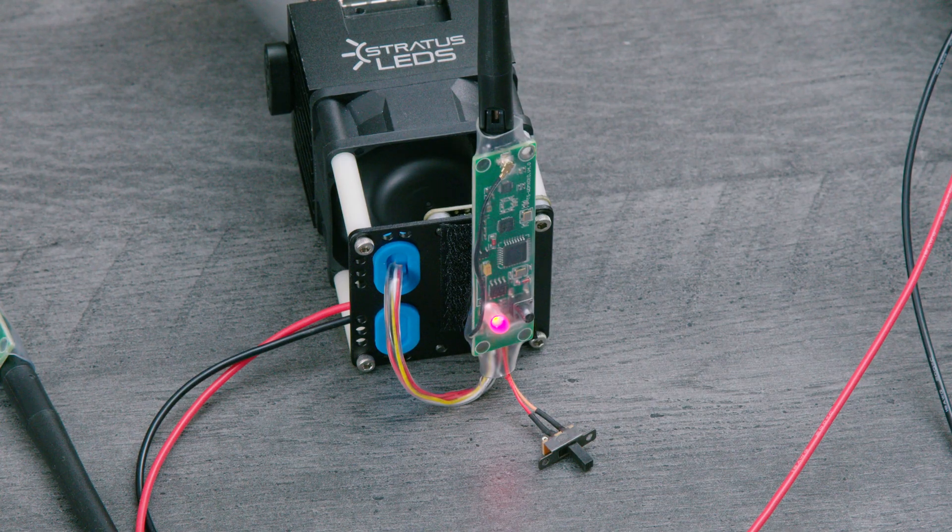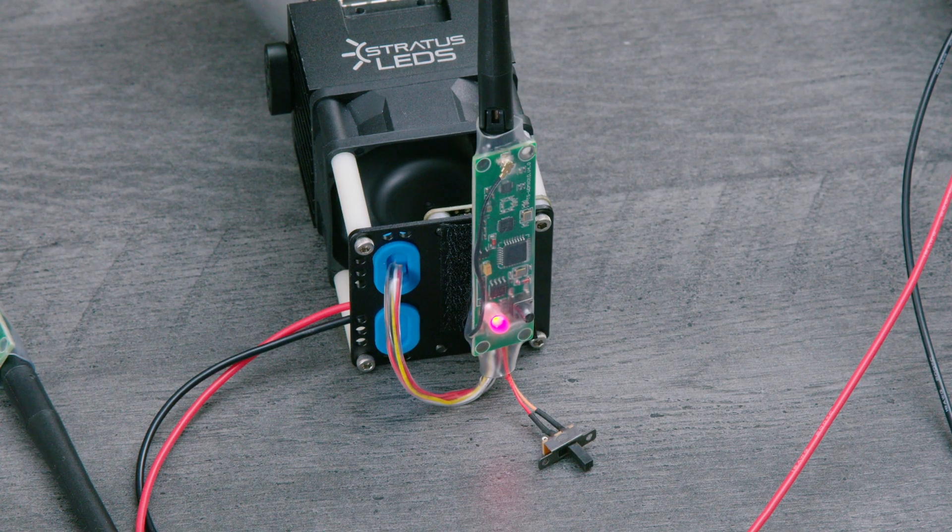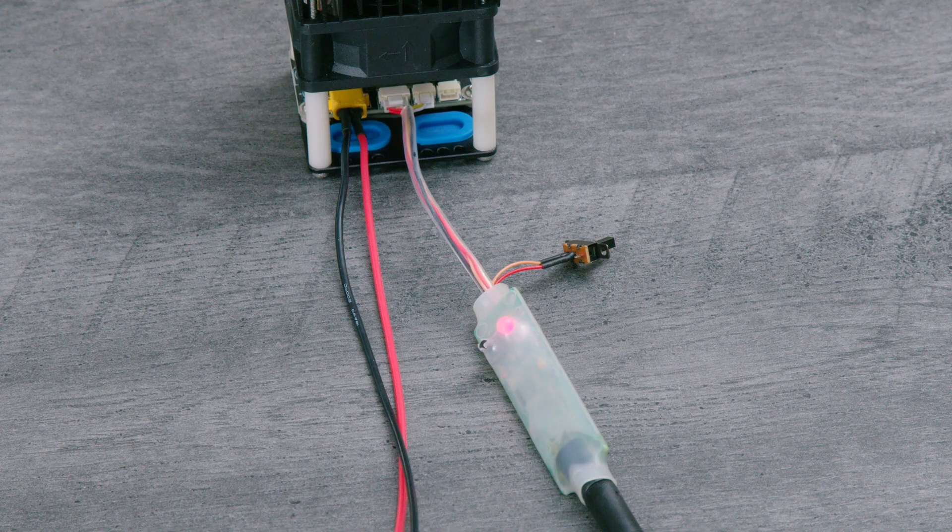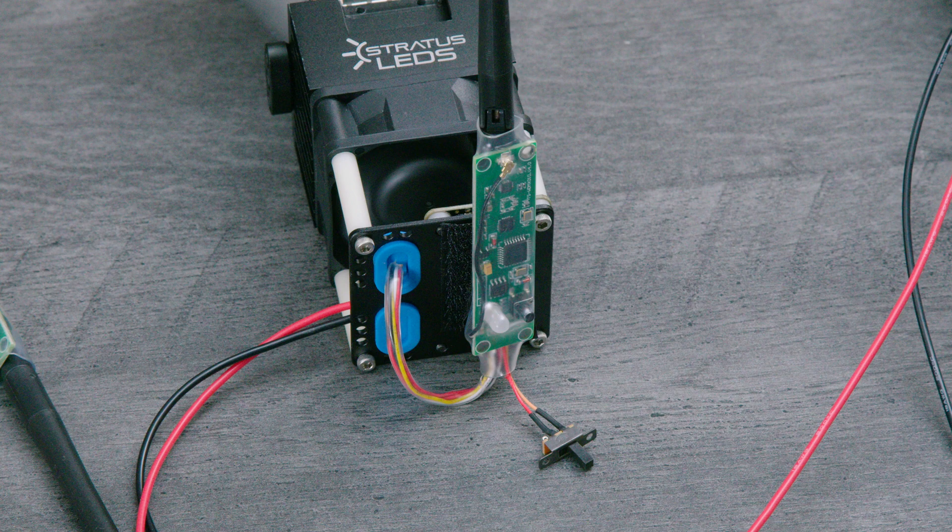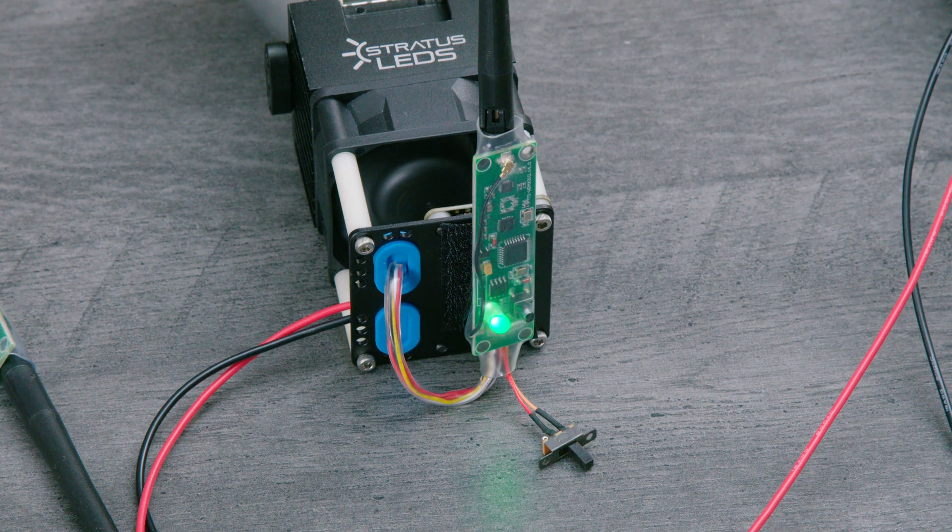If the transceivers are not receiving any DMX signal, the status lights will be solid. A flashing red status light means the device is transmitting, and a flashing green status light means the device is receiving.